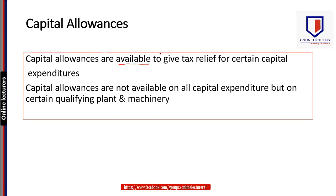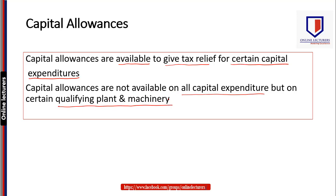Capital allowances are available to give tax relief for certain capital expenditure. Whenever you purchase or use any capital asset, there are chances that you will get some tax relief on that. But capital allowances are not available on all capital expenditure — only on certain qualifying plant and machinery. Capital allowances are not available for revenue expenditure, and not for all capital expenditure, but only for those classified as qualifying plant and machinery.